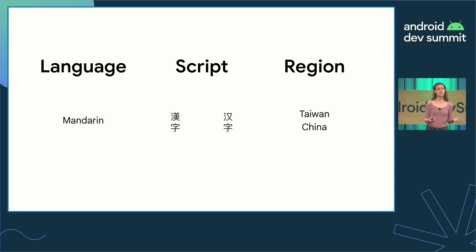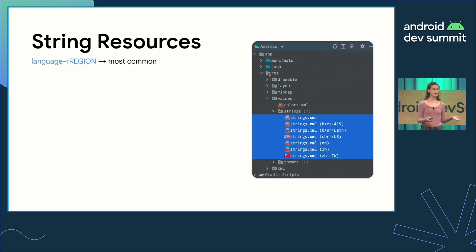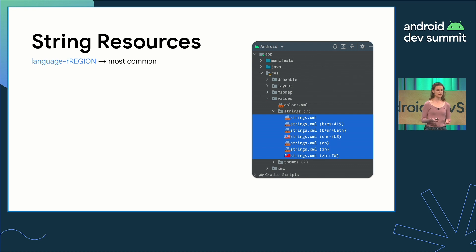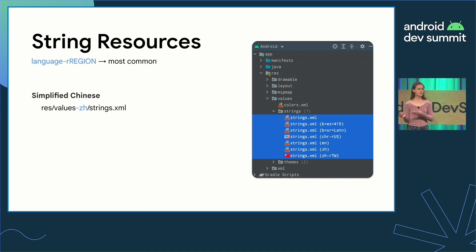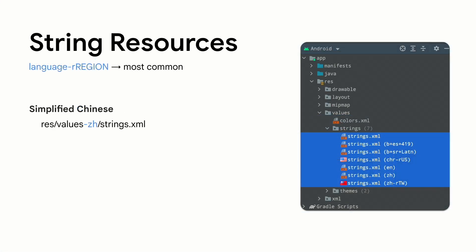For example, a user may speak Mandarin, which is one of the Chinese languages, write in traditional or simplified Chinese, and live in Taiwan or China. As app developers, we organize our app resources by language, script, and region. We can place our string resources in values folders appended with language tag qualifiers — for example, simplified Chinese strings in a values-zh folder, zh for Chinese. We can serve content to users living in Taiwan in a values-zh-rTW folder, r for region and tw for Taiwan.